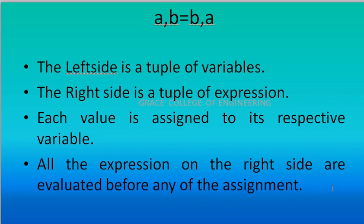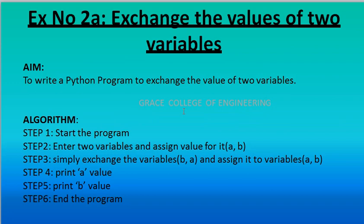I hope you all understood the concept very well. Let's see the lab program. While doing the lab exercise you want to follow the procedure. Exercise number 2A: exchange the value of two variables. Aim: to write a Python program to exchange the value of two variables. Algorithm — Step 1: start the program. Step 2: enter two variables and assign values for A and B. Step 3: simply exchange the variables — assign B comma A to A comma B.